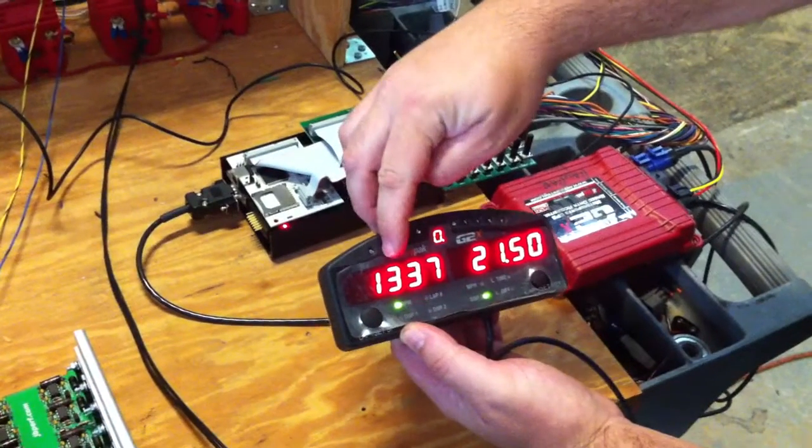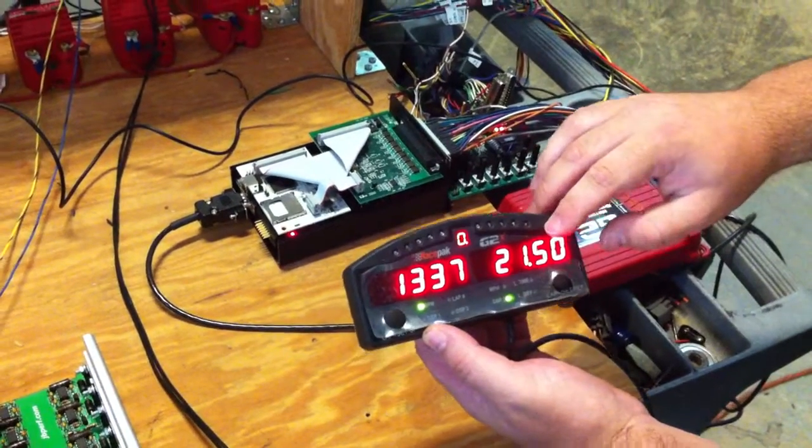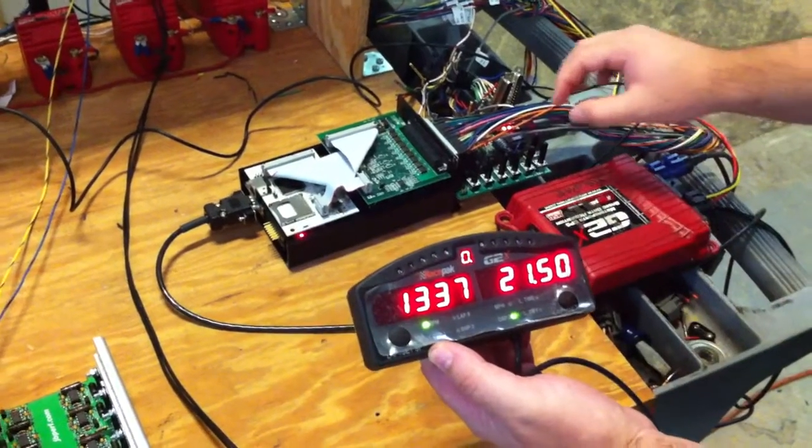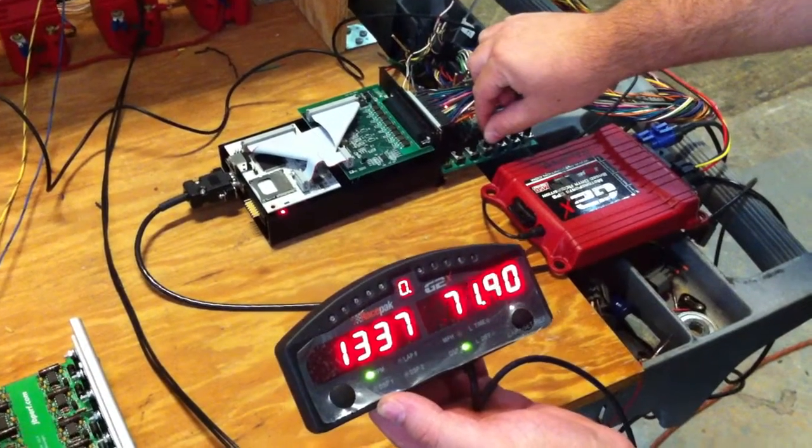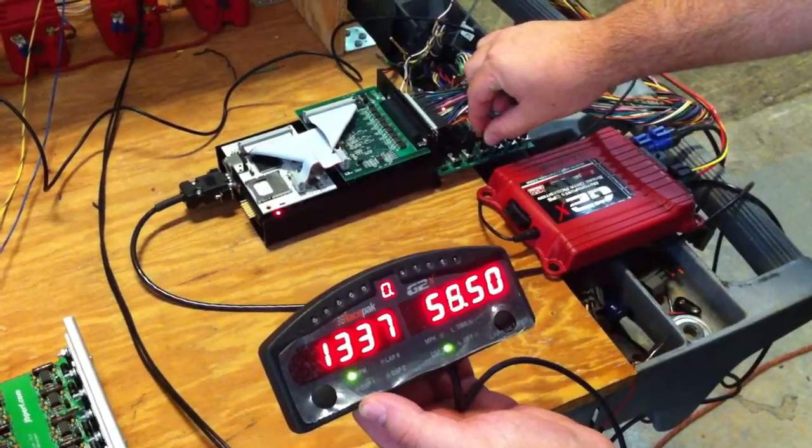What we have on the left side screen, that is our RPM. Our right side screen is actually set for throttle position. I am going to manipulate throttle position. Pretty cool.